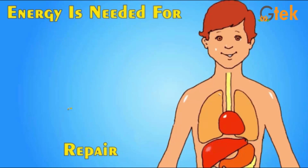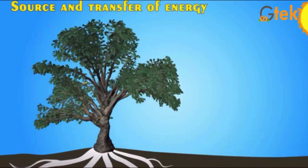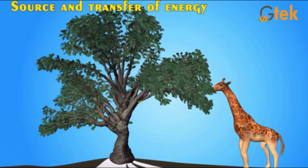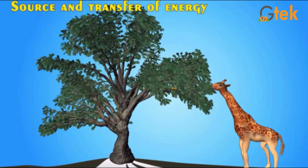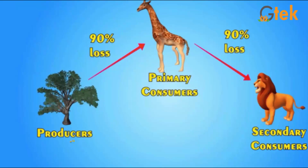Now we are going to see the transfer of energy. The source is the sun, which transfers energy to the tree. The tree gets energy from the sun, and it is eaten by the giraffe, so the giraffe takes energy from the tree. The lioness gets energy from the giraffe by eating it. The tree is the producer, the giraffe is primary consumer, and the lion is secondary consumer. Here, from producer to primary consumer, 90% of energy is lost, and from primary consumer to secondary consumer, 90% of energy is also lost.